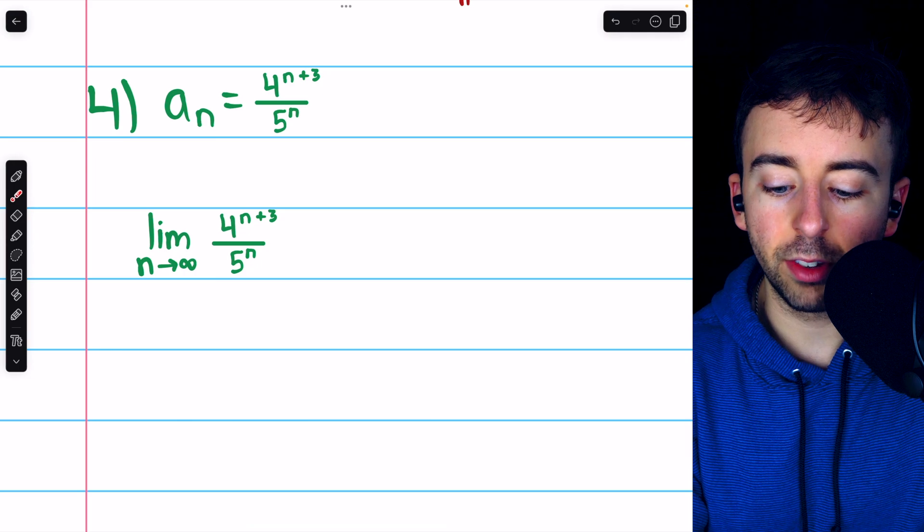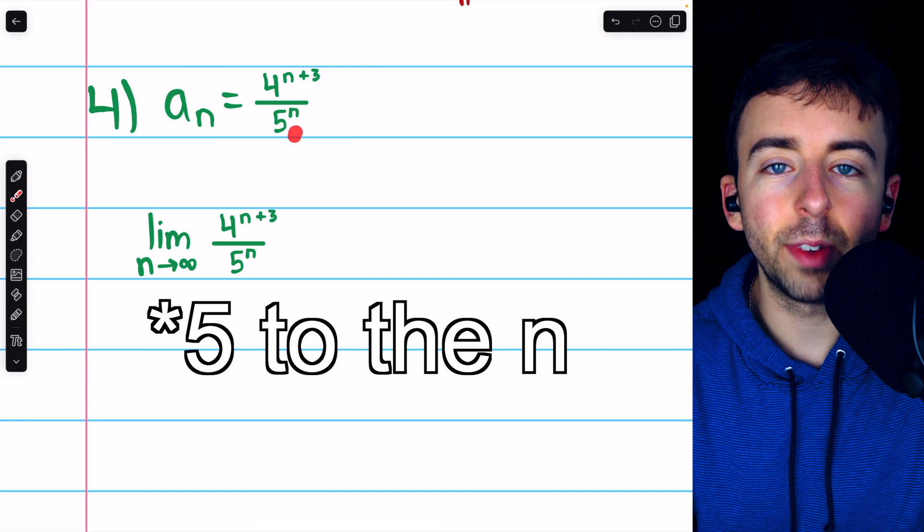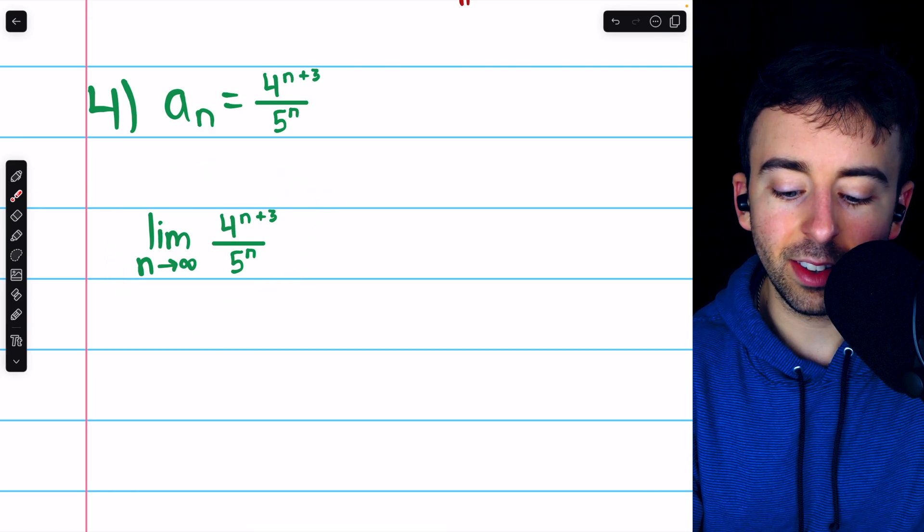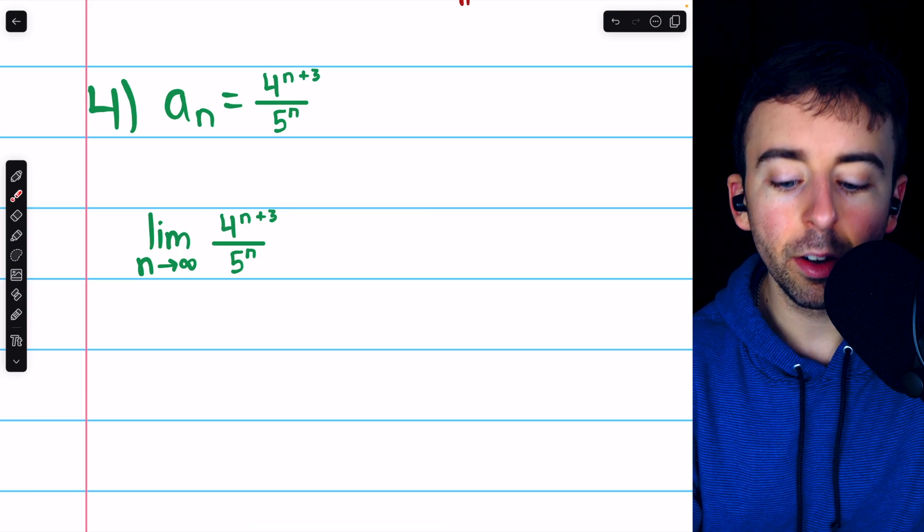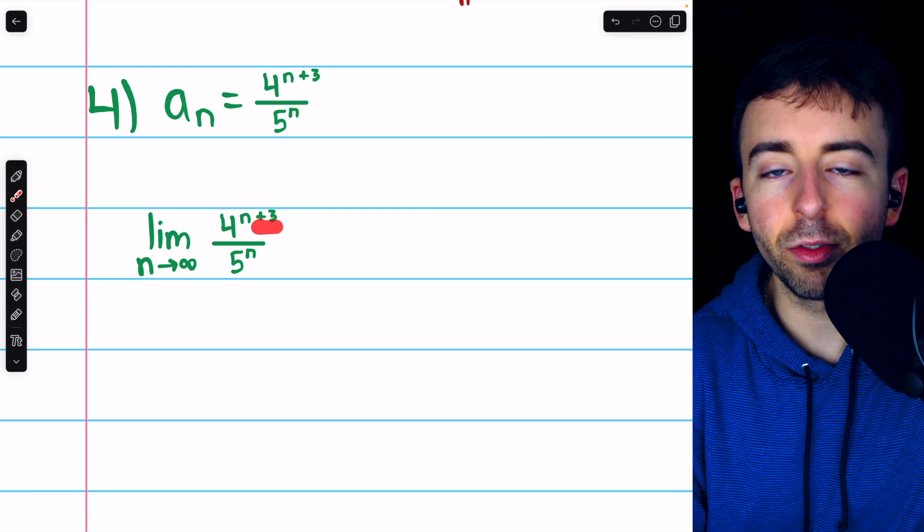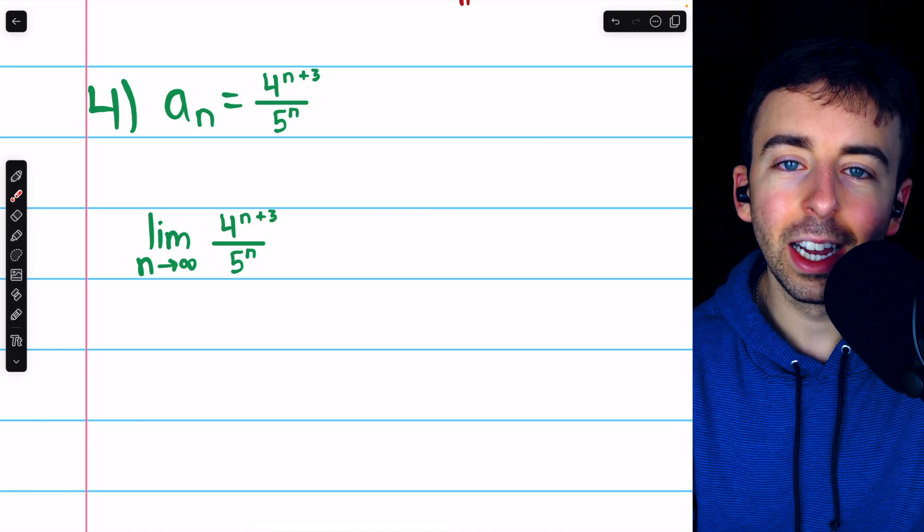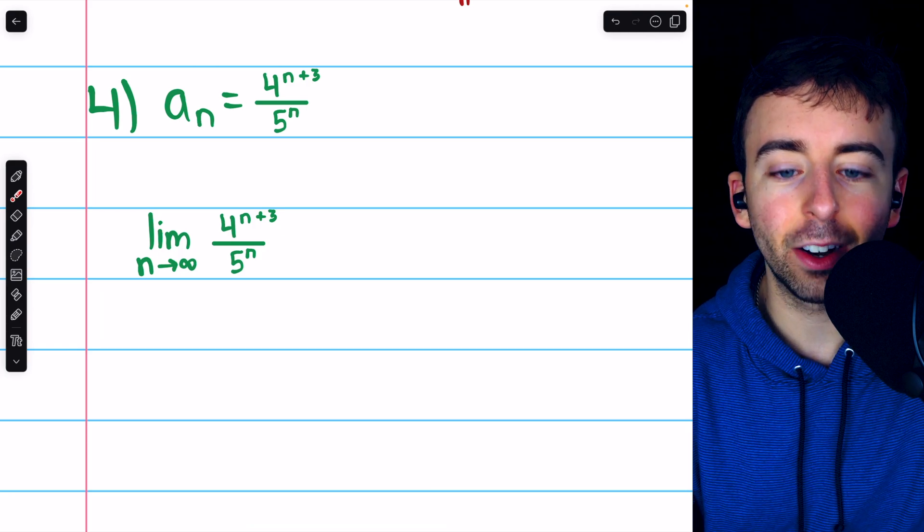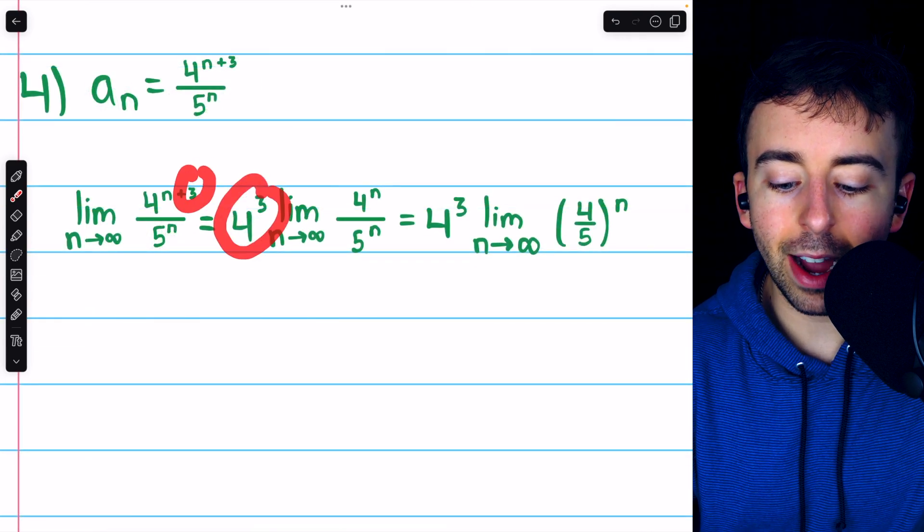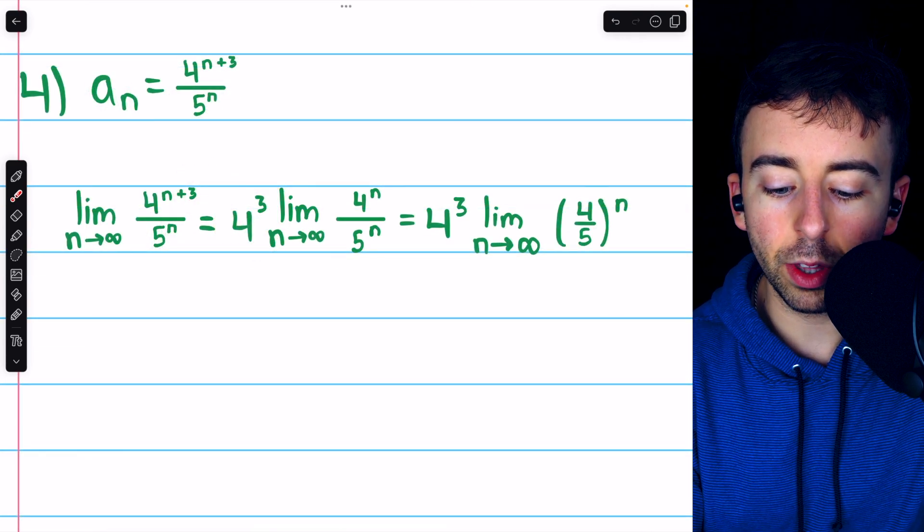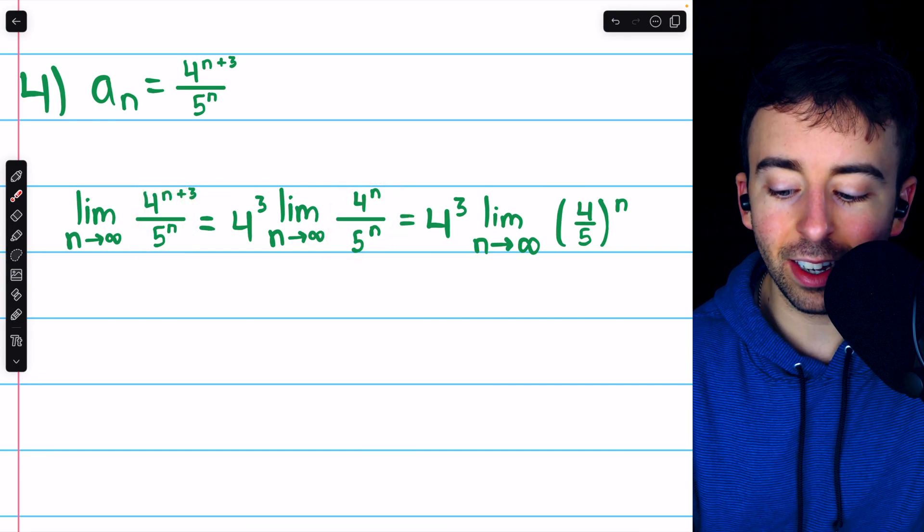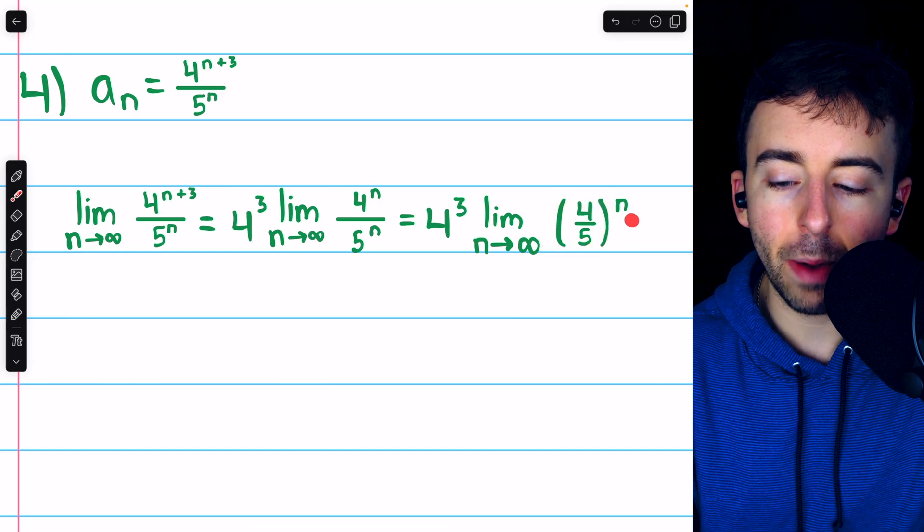Number 4, here's a cute example, 4 to the n plus 3 over 5 to the n. Let's look at the limit of this as n goes to infinity. First thing we should notice is that 4 and 5 pretty much have the same power. 4 just has this plus 3 in its power that the 5 doesn't have. But this plus 3 is just 3 additional factors of 4. So let's just take those 3 additional factors of 4 out of the limit, since they're not being affected by n. Taking those 3 factors of 4 out, inside the limit we're left with 4 to the n divided by 5 to the n, which we can rewrite with just a single power as 4 over 5 to the power of n.